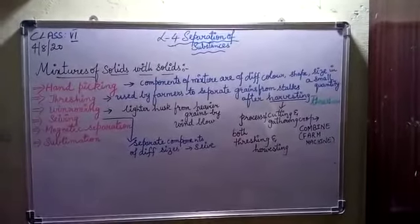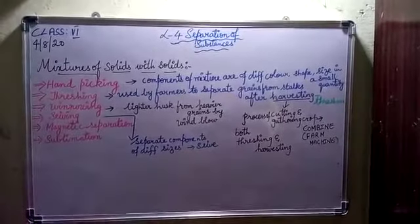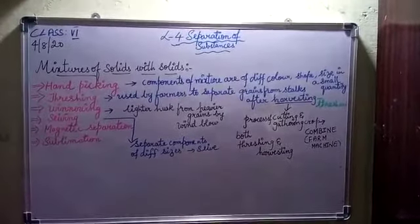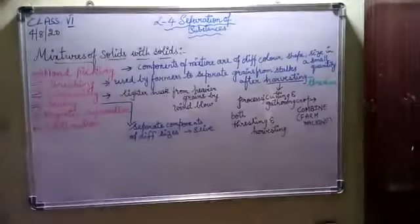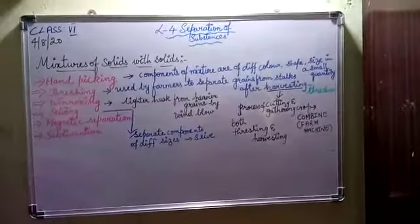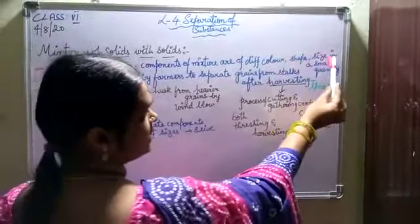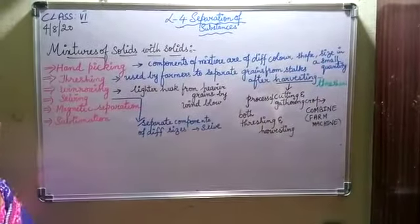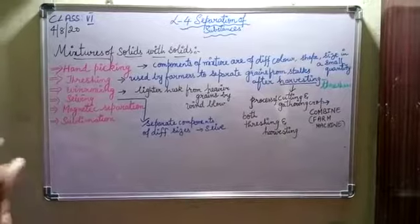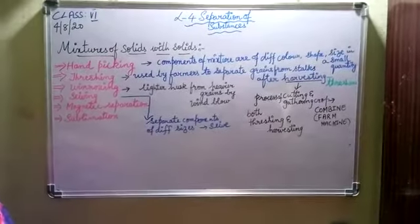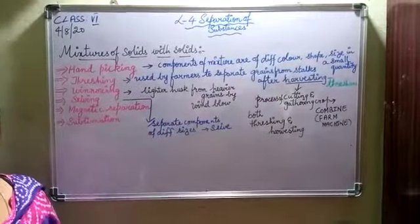In mixtures of solids with solids, we have six methods. The first method is hand picking. The name itself says that we can separate the components of a mixture by hand. Components of mixtures are of different colors, shape, and size. If the components are of different colors, shape, and size, and if it is in a small quantity, then we can use this method called hand picking.